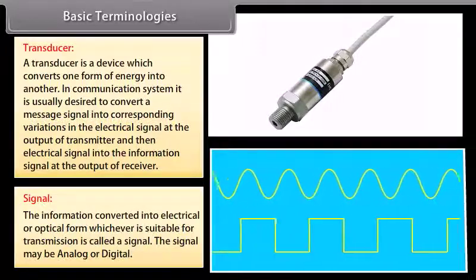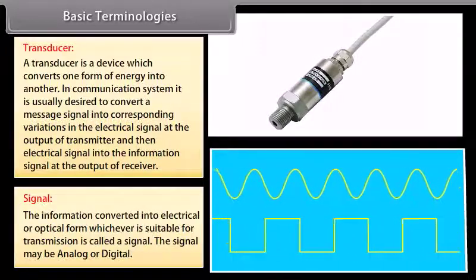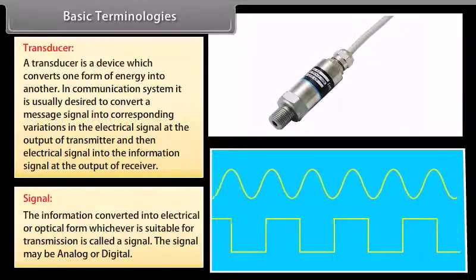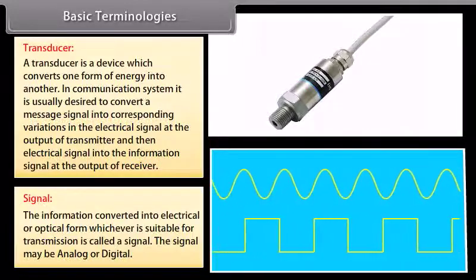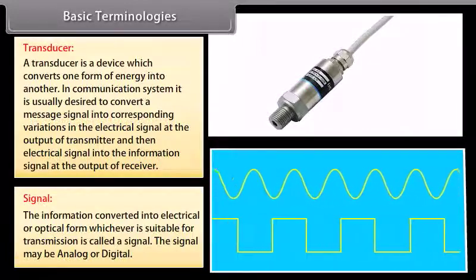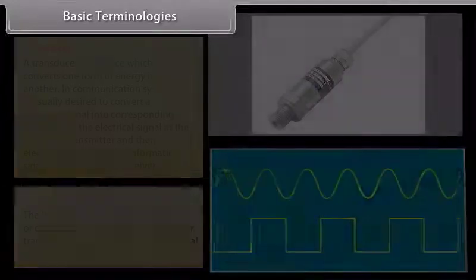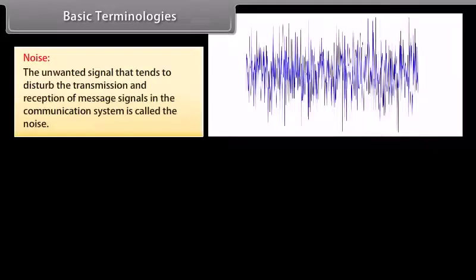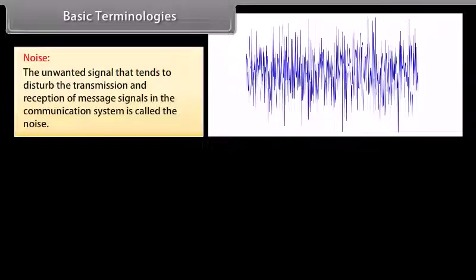Signal: the information converted into electrical or optical form, whichever is suitable for transmission, is called a signal. The signal may be analog or digital. Noise: the unwanted signal that tends to disturb the transmission and reception of message signals in the communication system is called noise.